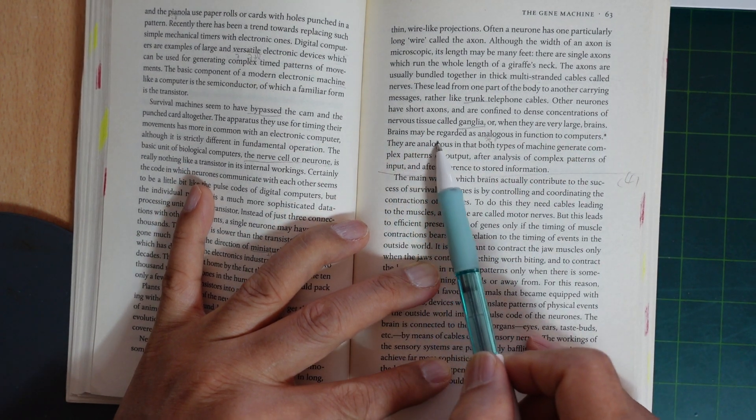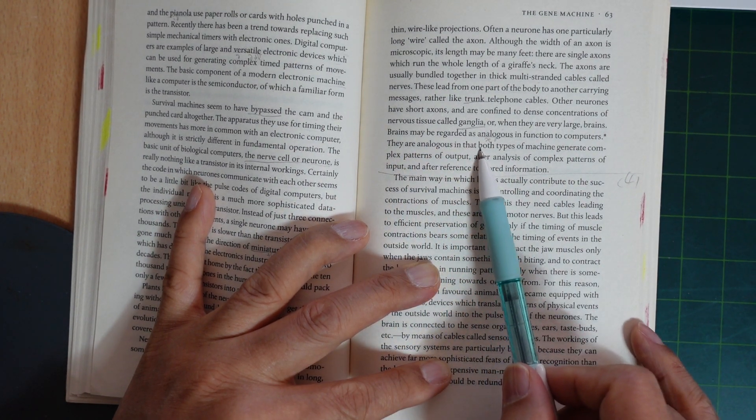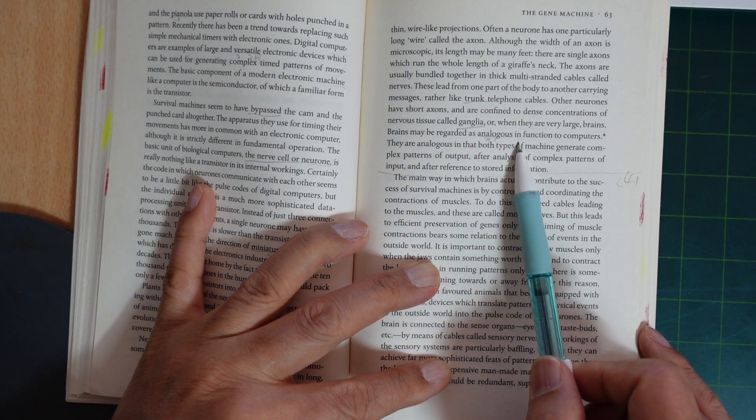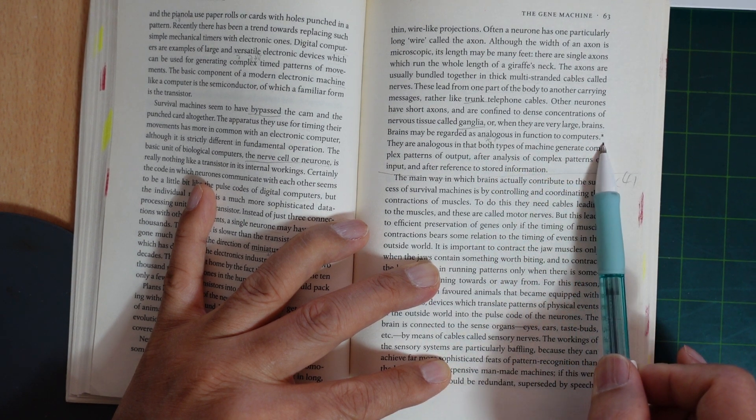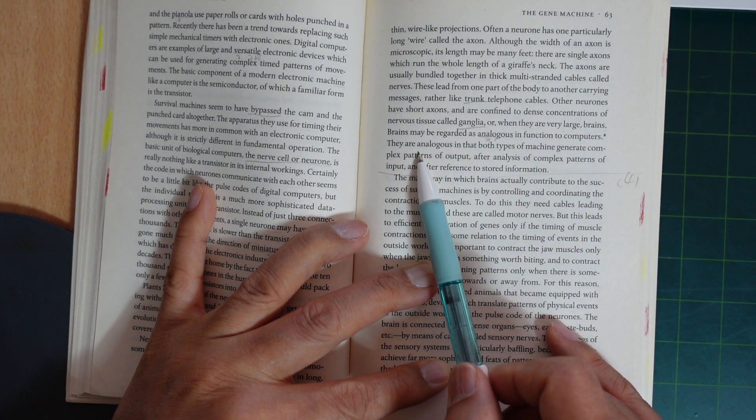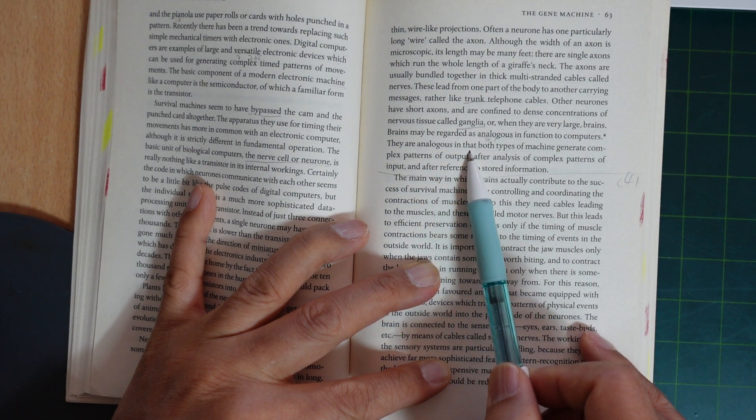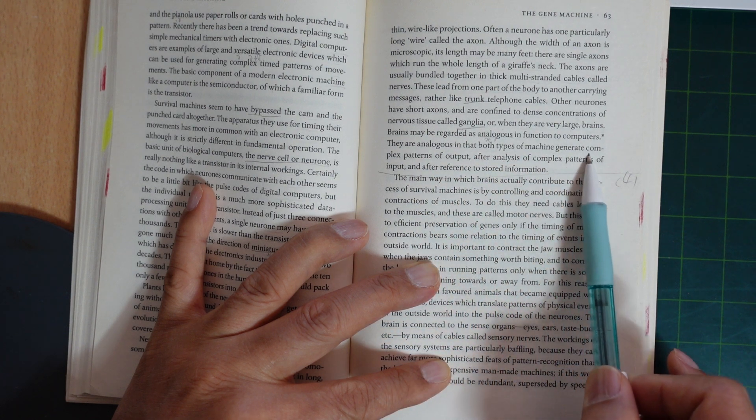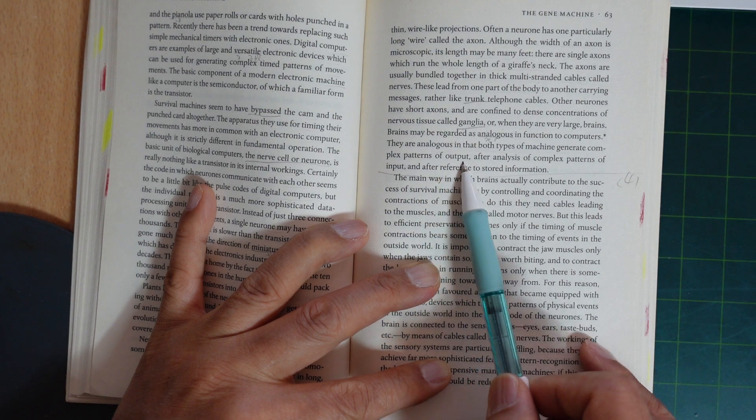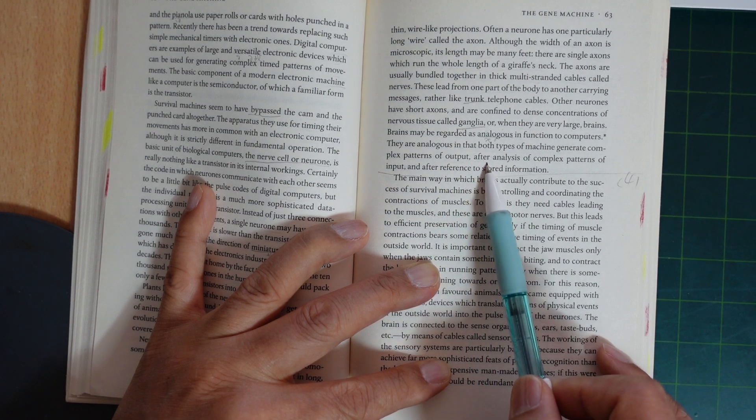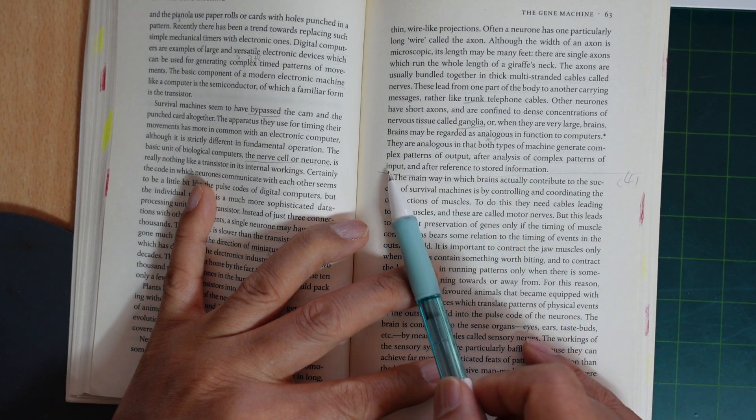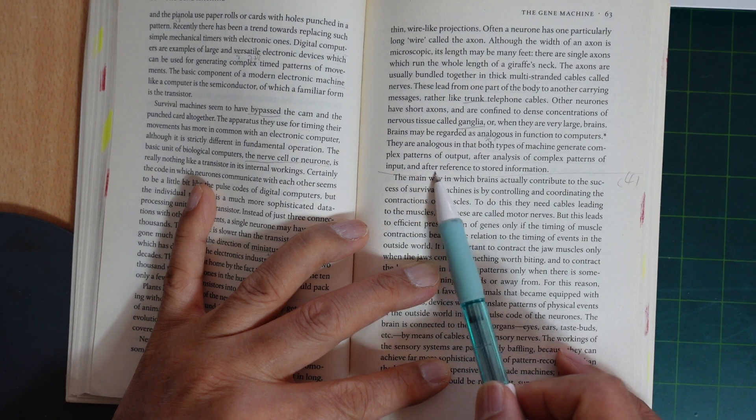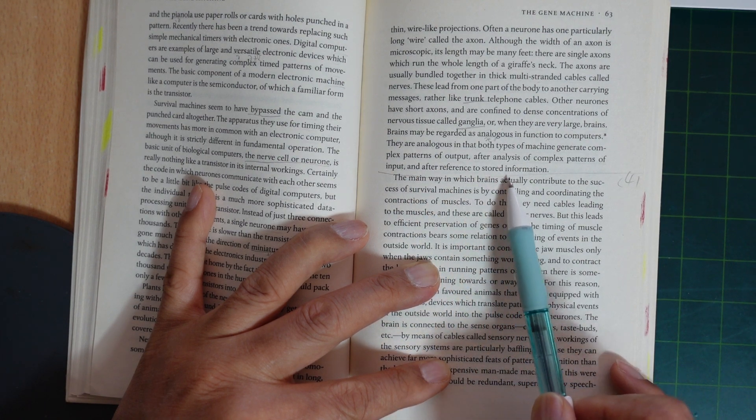Brains may be regarded as analogous in function to computers. They are analogous in that both types of machine generate complex patterns of output after analysis of complex patterns of input and after reference to stored information.